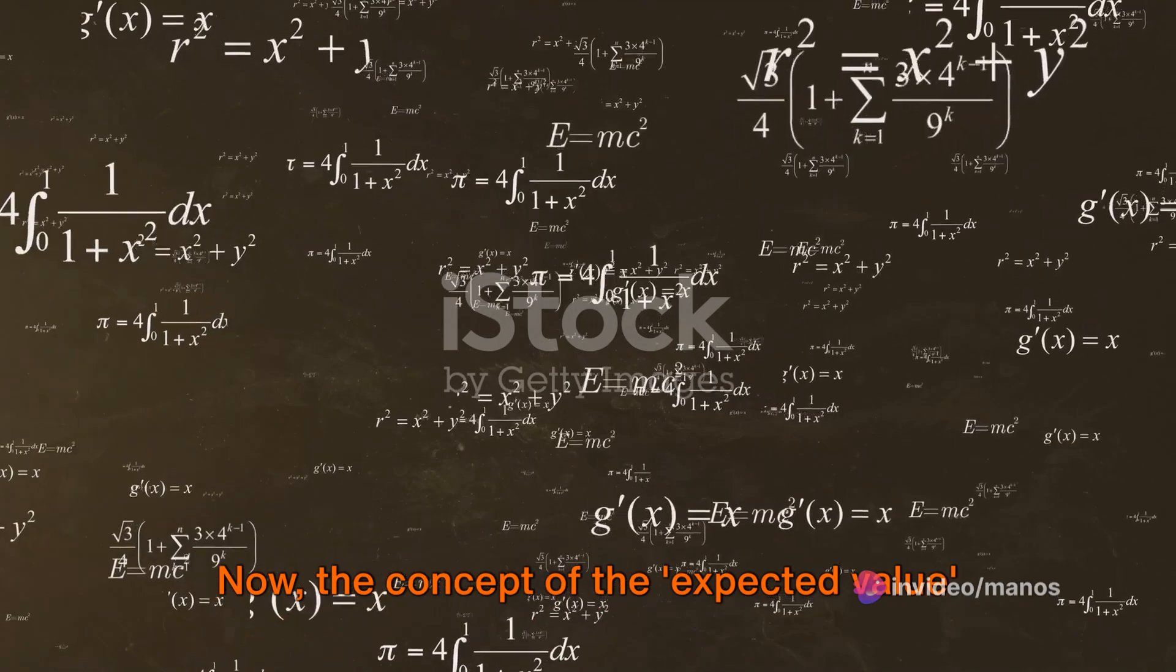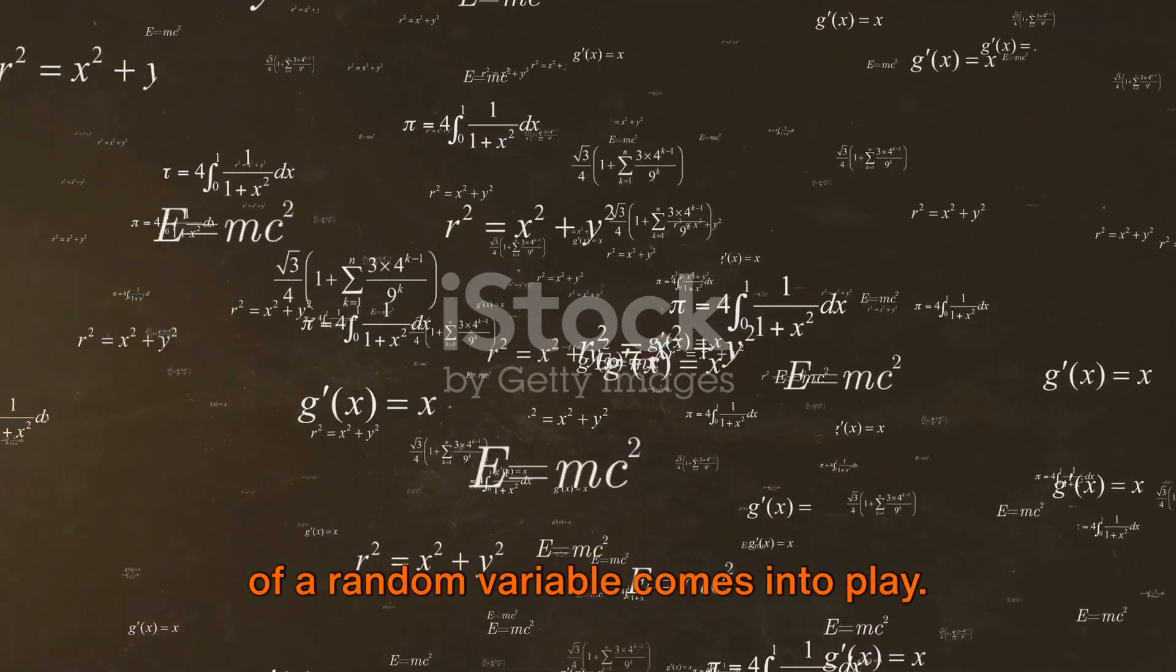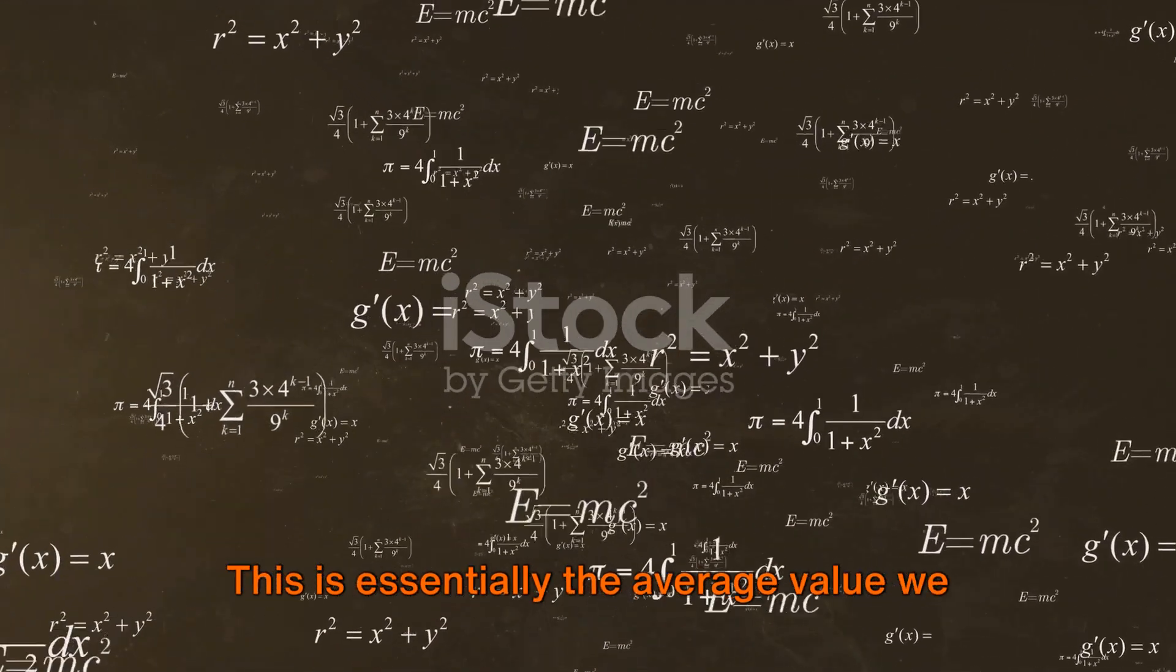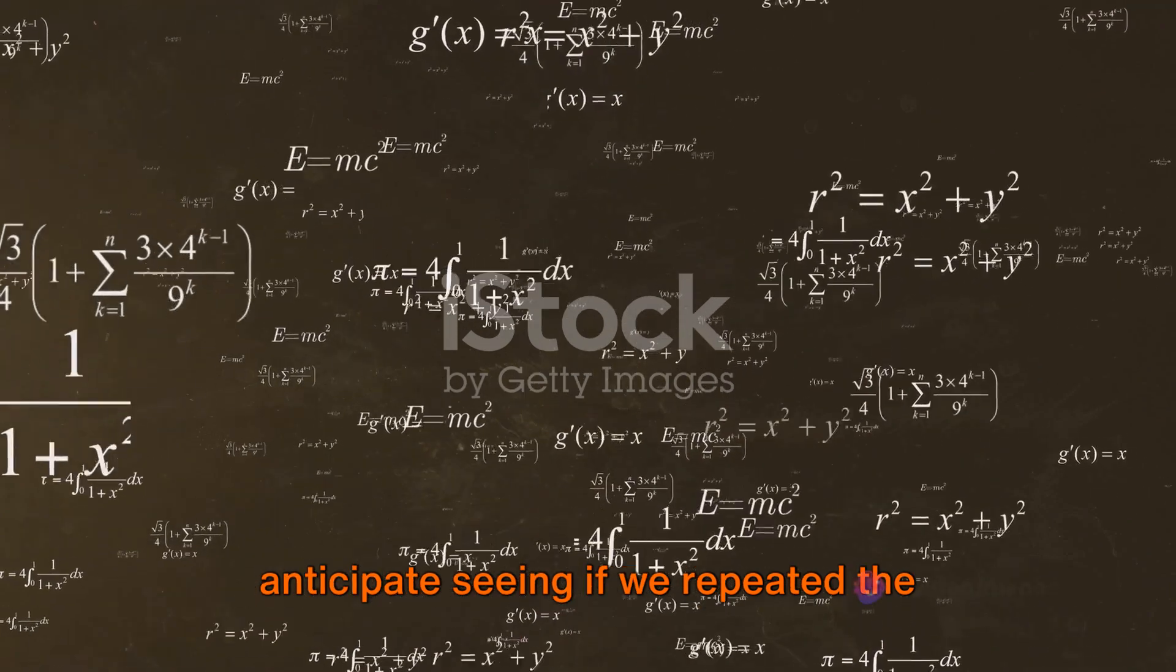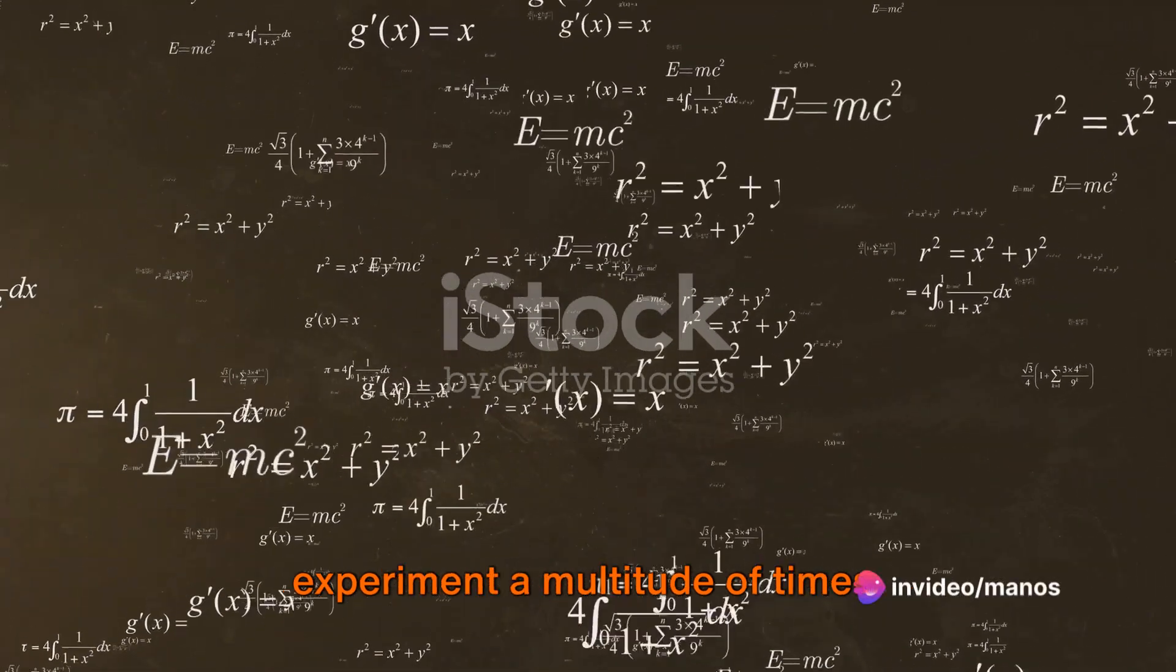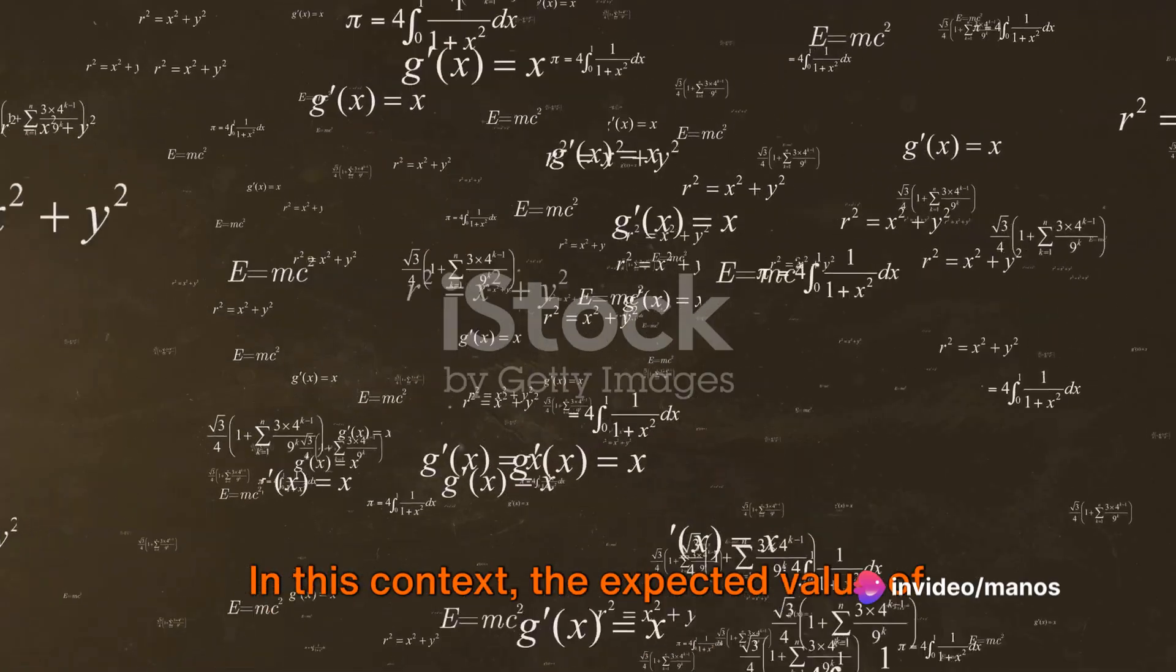Now the concept of the expected value of a random variable comes into play. This is essentially the average value we anticipate seeing if we repeated the experiment a multitude of times.